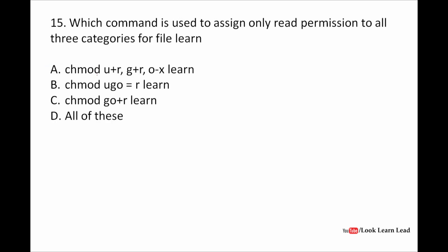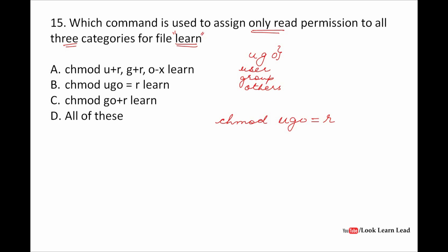Which command gives read-only permission to all three categories for the file named 'learn'? The three categories are u (user), g (group), and o (others). To give only read permission to all of them, we use: chmod ugo=r learn. The answer is chmod — change mode — for user, group, and others equal to read only, applied to the file named learn.